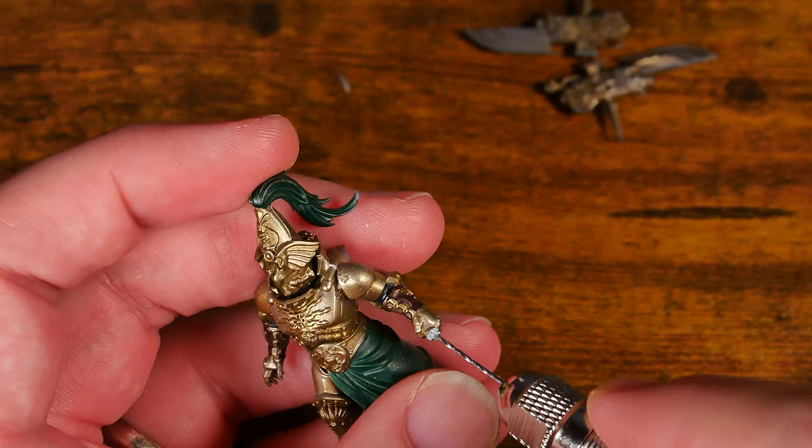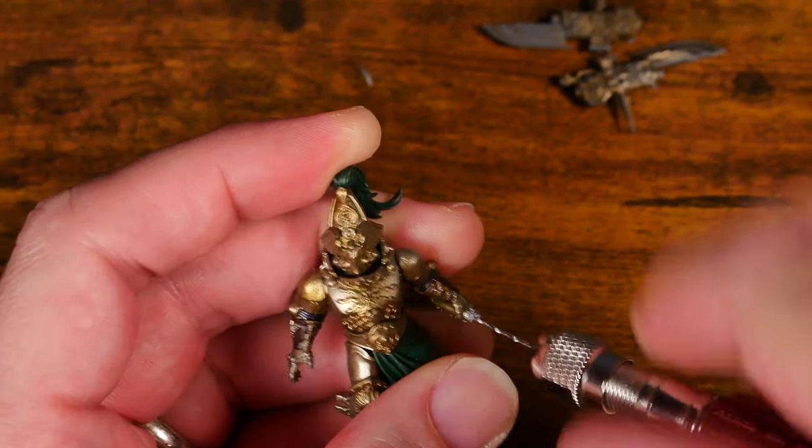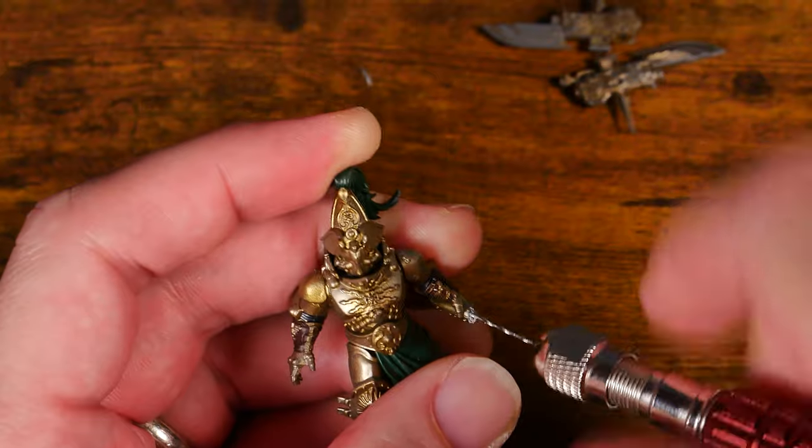I then take my pin vise, with a drill bit that's the same diameter as my paperclips, and carefully drill out a hole on both pieces, a couple millimeters deep.